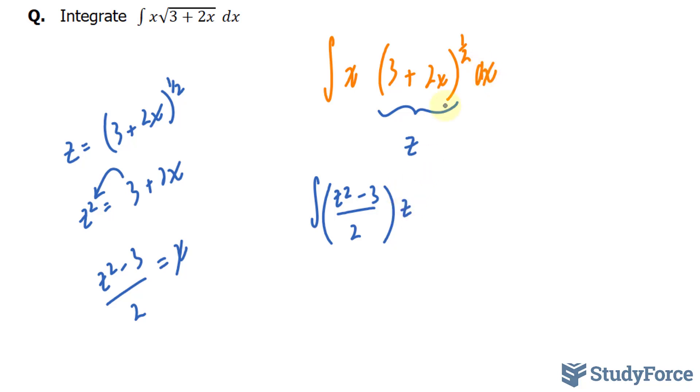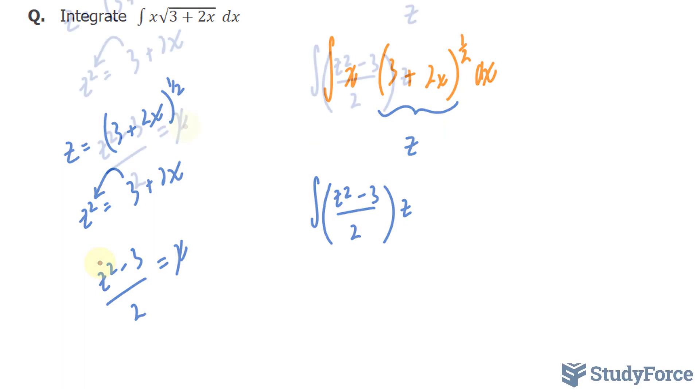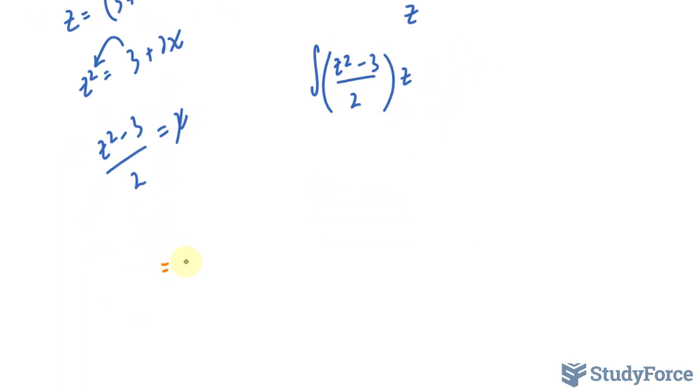Since we have changed the expression from being in terms of x to z, we have to change dx so that it is dz. And the way we do that is by finding the derivative of this equation with respect to z. Taking the derivative of x gives us dx over dz.